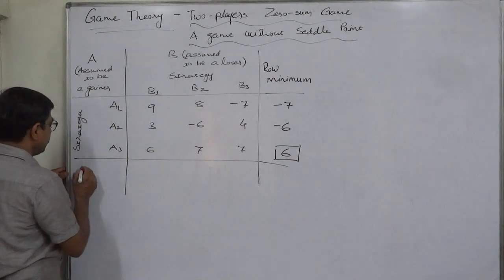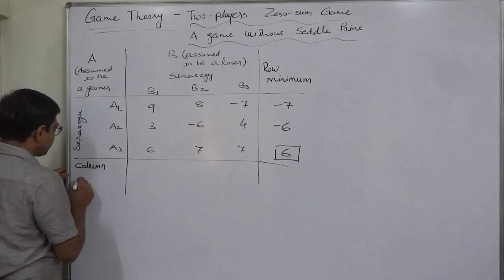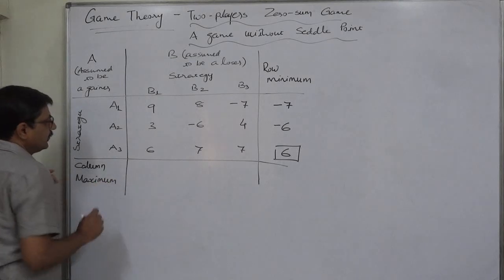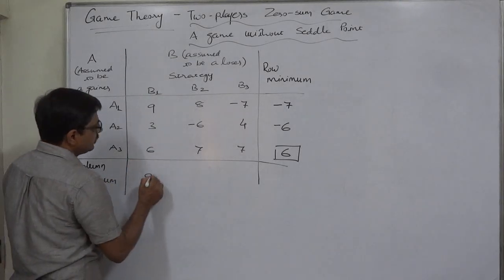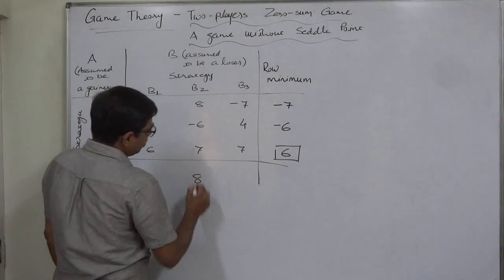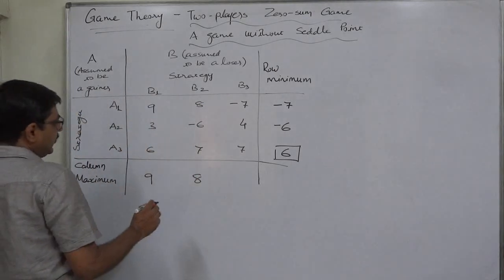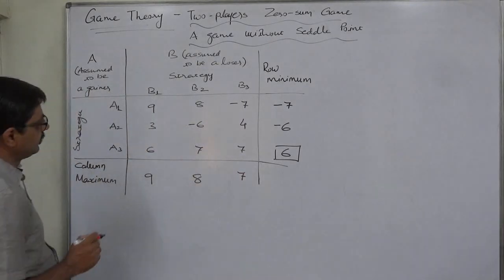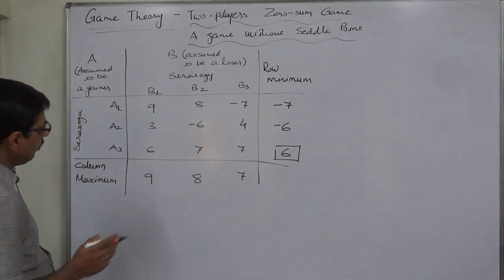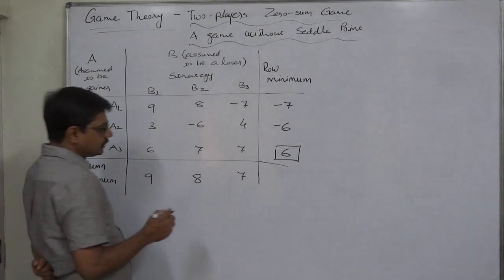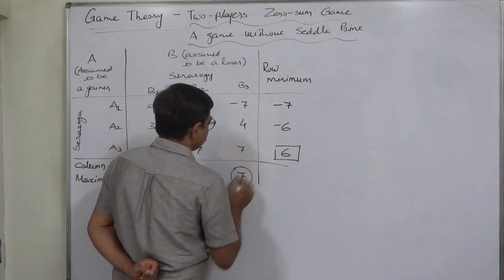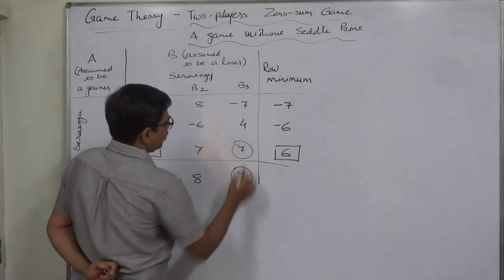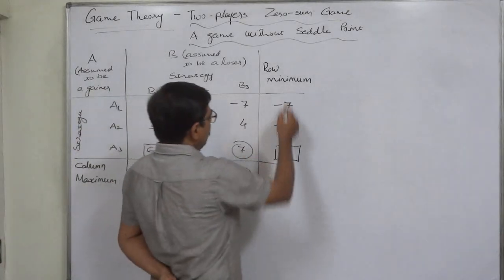The next step is to find the column maximum — the maximum value from each and every column. In the first column the maximum is 9, in the second column the maximum is 8, and in the third column the maximum is 7. From these maximum values we need to find the minimum value.